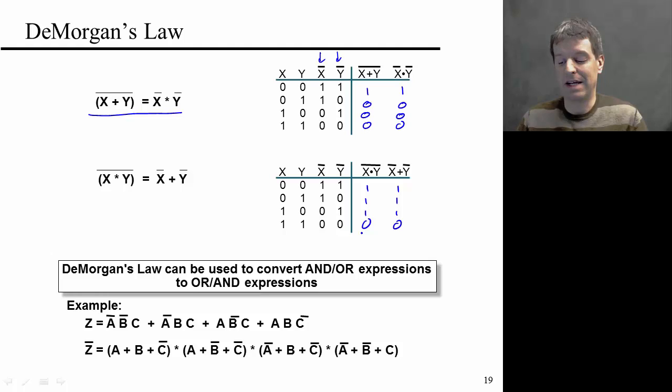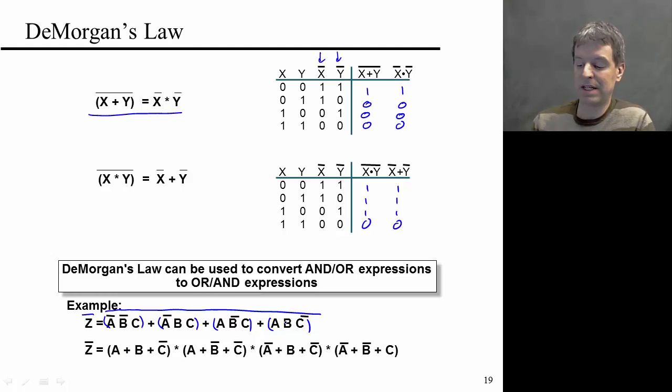So this generalizes. If you have an expression as shown down here for this function Z and you want to compute not Z, essentially you do the exact same thing: replace ORs with ANDs and replace a bar over everything with bars over every single variable. The only thing that I really want to point out is that when you do this, it's very important to keep track of these parentheses here. Obviously you don't need them in the original expression, but you do want to have them here, because if you forget to take them into account, you'll clearly get a result that is incorrect.